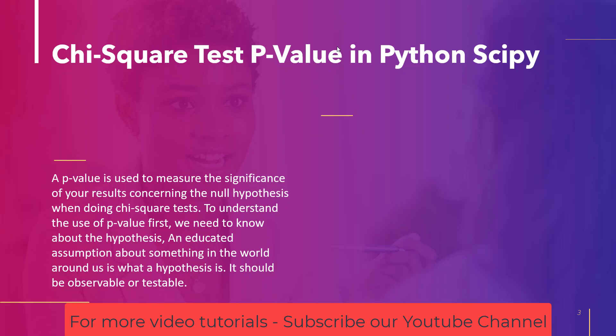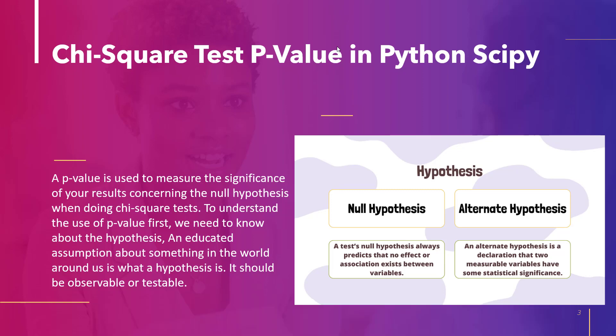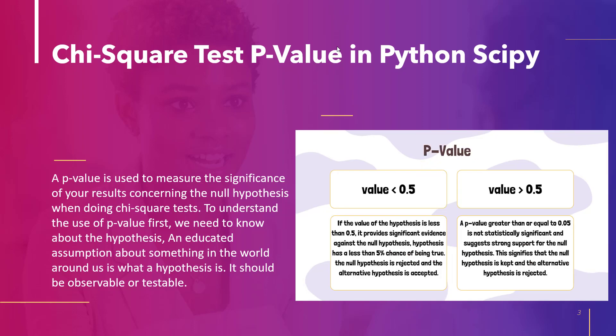Hypothesis can be divided into two categories: Null Hypothesis and Alternate Hypothesis. The null hypothesis always predicts that there is no impact or association between variables, whereas the alternate hypothesis states that two observable variables are statistically significant. We can use the p-value to determine whether we should accept the null or alternate hypothesis. In general, if the p-value is smaller than 0.05, it provides strong evidence against the null hypothesis, meaning the null hypothesis is rejected while the alternate hypothesis is accepted.